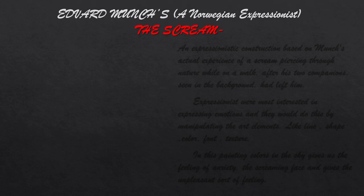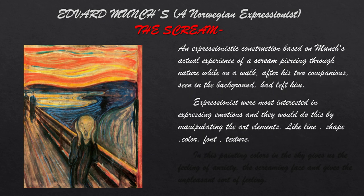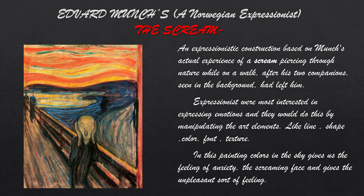A famous example is the painting by Edvard Munch, The Scream — an Expressionist work based on Munch's actual experience of a scream passing through nature while on a walk, after his two companions seen in the background had left him. Expressionists were most interested in expressing emotions by manipulating art elements like line, shape, colour, font and texture. In this painting, the colours in the sky give us a feeling of anxiety, and the screaming face gives an unpleasant sort of feeling.